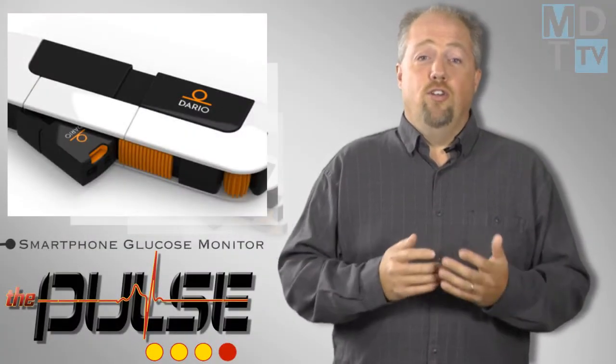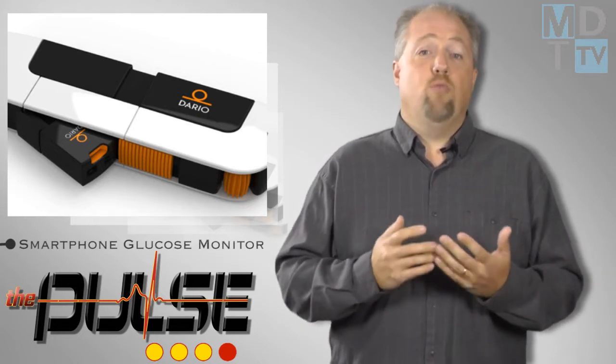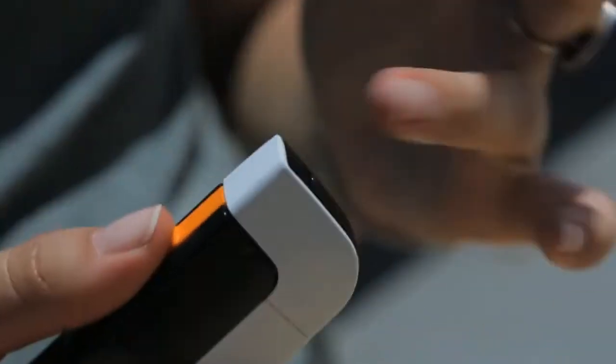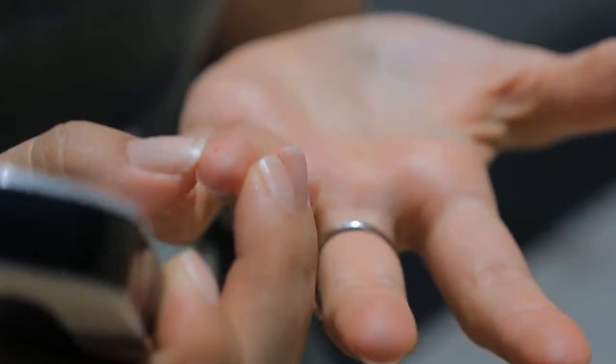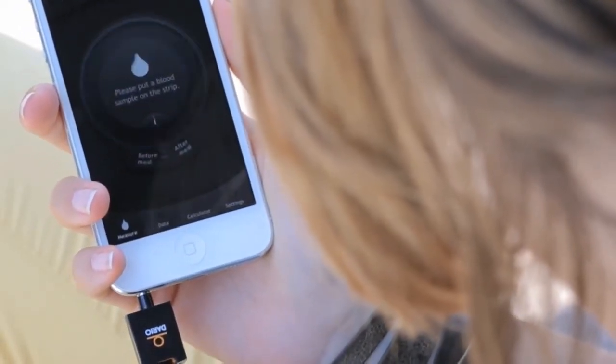LabStyle Innovations has a new compact glucose meter that pairs with a smartphone to display readings and maintain a historical record of the patient's blood sugar. The Dario Glucometer, which plugs into the phone's audio jack, comes with 25 test strips and a built-in lancet.